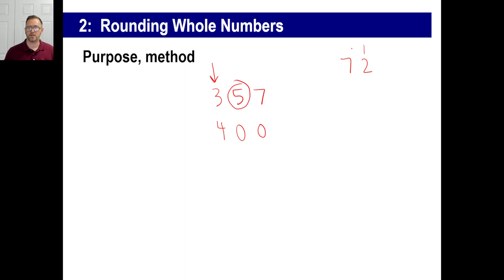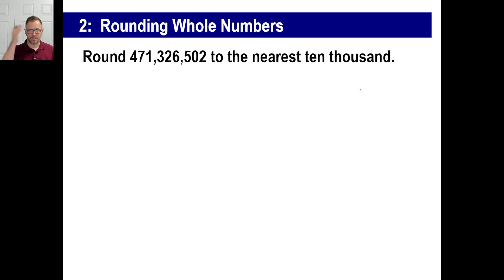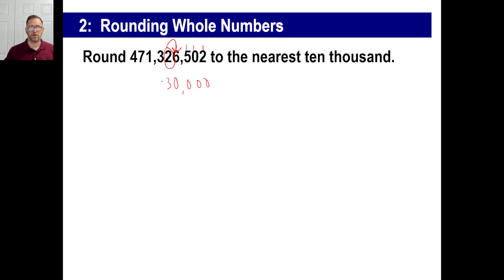For example, round 72 to the nearest ten. The tens digit is seven; look to the right — is it five or greater? No, it's two, so we round down: the seven stays and the two becomes zero, giving us 70. Now round 26,502 to the nearest ten thousand. The ten-thousands digit is 2; look right — is it five or greater? Yes! So two rounds up to three, everything to the right becomes zeros: 30,000. Don't forget to keep any digits to the left.